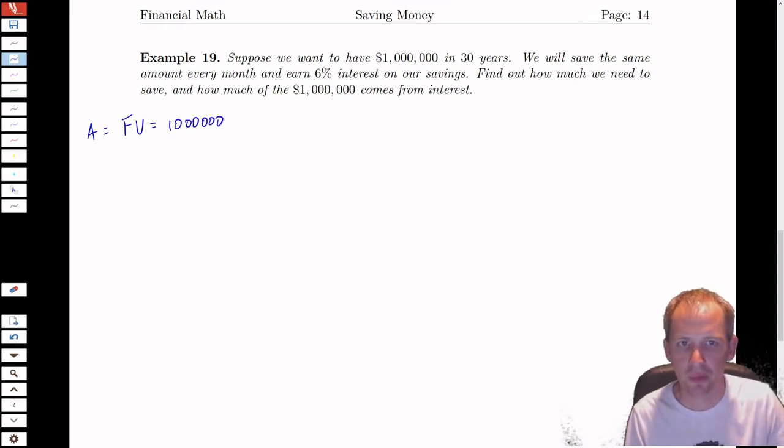And we want to have that in 30 years, so that tells us that the time is 30 years. We'll save the same amount every month. That tells us little n is 12.